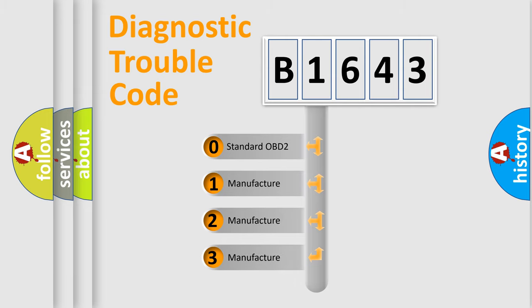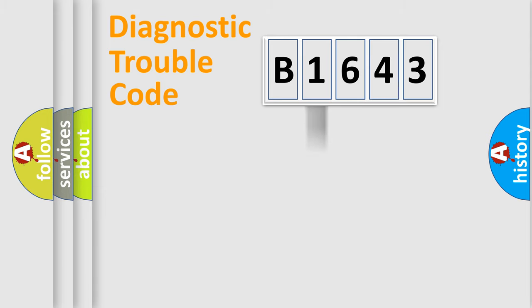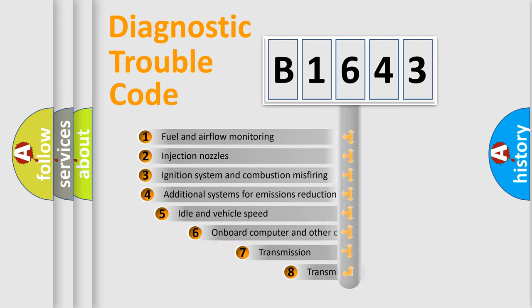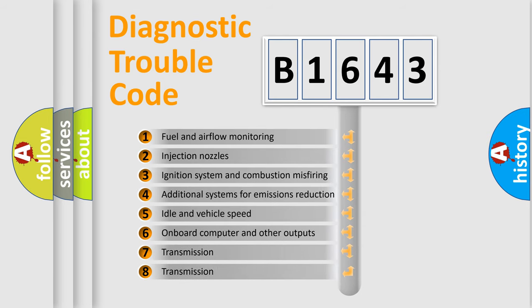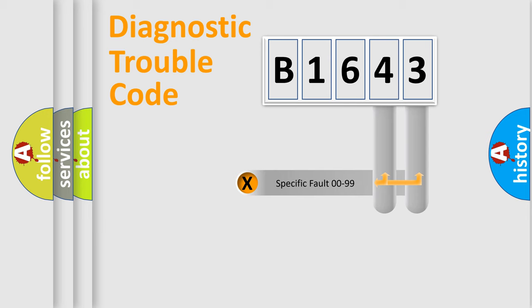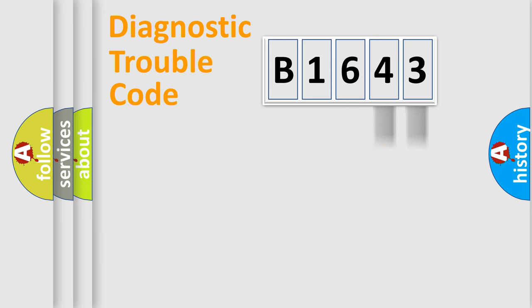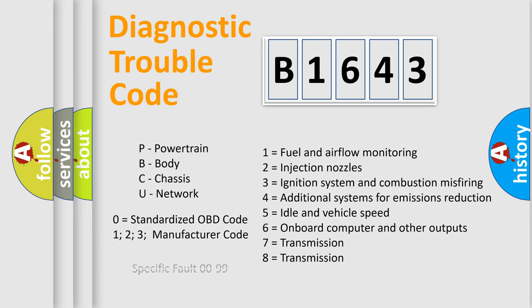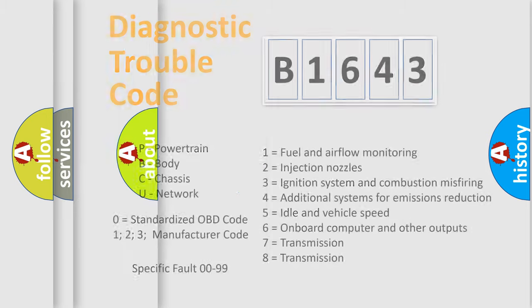If the second character is expressed as zero, it is a standardized error. In the case of numbers 1, 2, or 3, it is a manufacturer-specific error expression. The third character specifies a subset of errors. This distribution is valid only for the standardized DTC code, where the last two characters define the specific fault of the group — but only when the second character is zero.